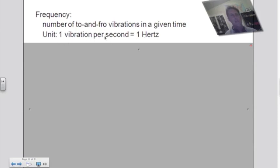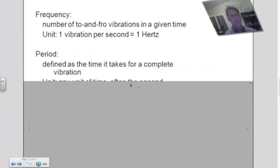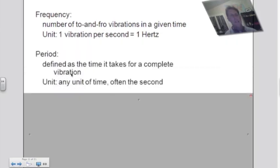So one vibration per second equals one hertz. If I look at the period, the period defined as the time it takes for one complete vibration or one complete cycle, and the unit here is any unit of time, or often it is the second.